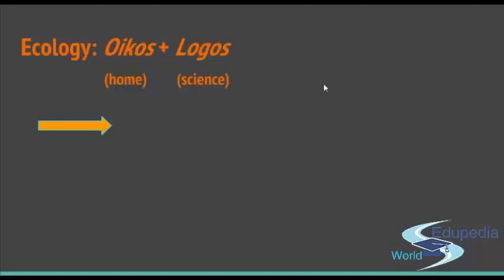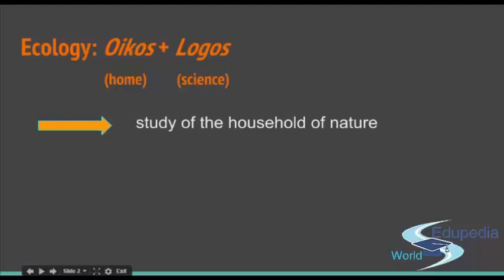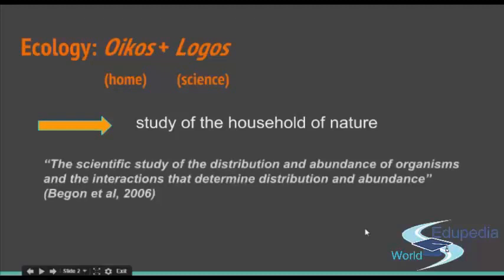Combining them together, you would get, of course, a science of a home, or less literally, a study of the household of nature. The idea of the household is the area where nature lives — a living creature in its habitat. And this is the main point: interactions within these two components, interactions between the living creature and its surrounding. This is one of the definitions you can find about ecology.